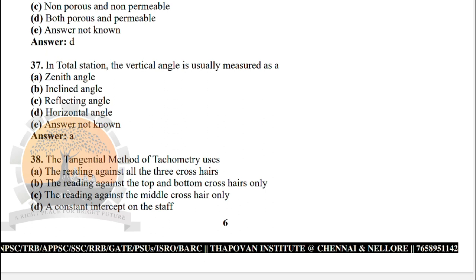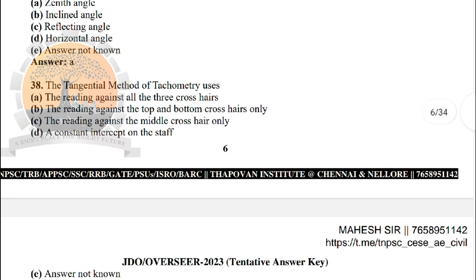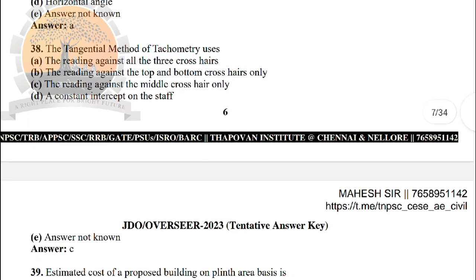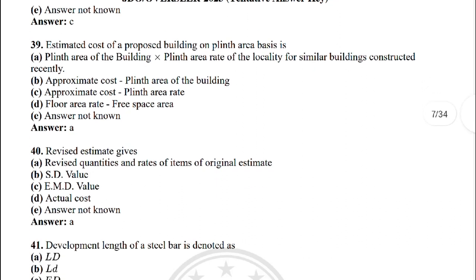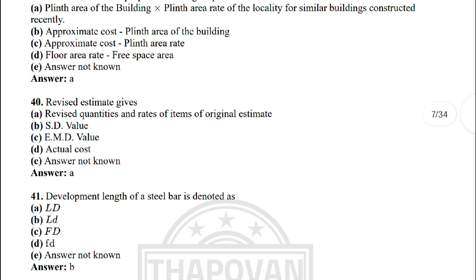Next: the tangential method of tacheometry uses — the correct answer is option C: the reading against the middle cross-hair only. Next: estimated cost of the proposed building on plinth area basis — the correct answer is option A: plinth area of the building × plinth area rate of locally similar building constructed recently.